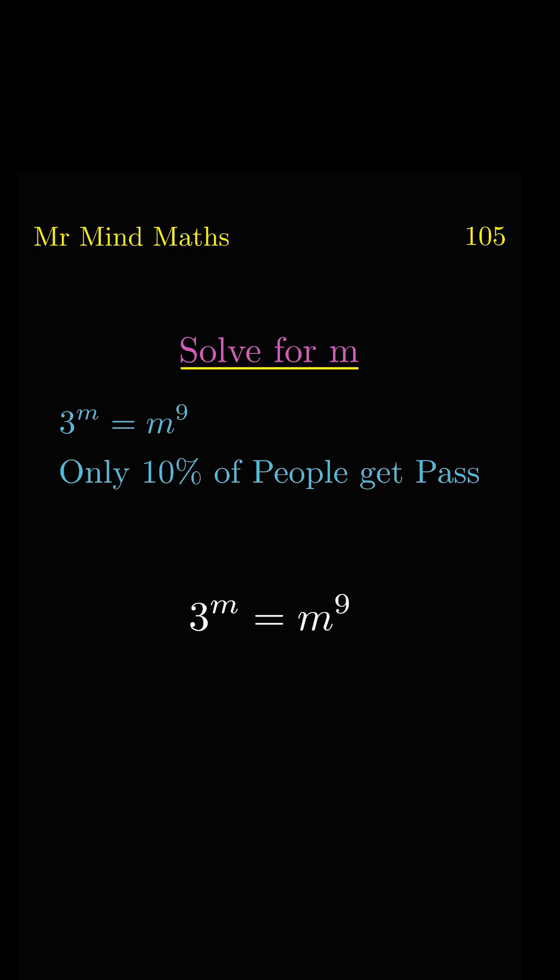On the left-hand side, the power of 3m by m will get cancelled. I will take 1 over m power on both sides, so on the right-hand side the power 9 and 1 over 9 will get cancelled.